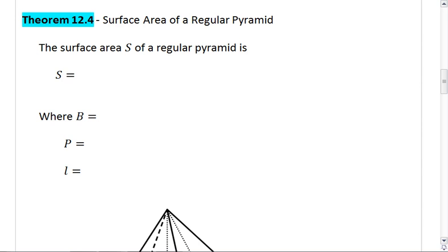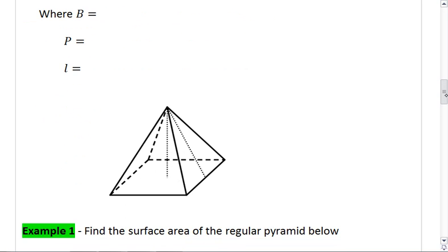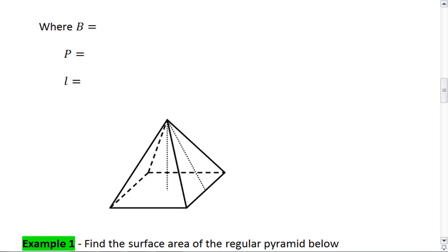Now let's look at the surface area for a regular pyramid. A regular pyramid is just telling us that the base of our pyramid is a regular polygon.